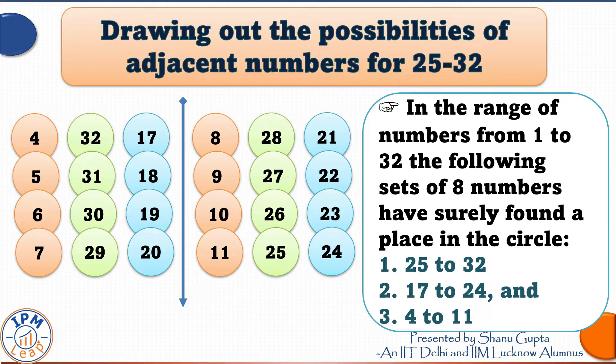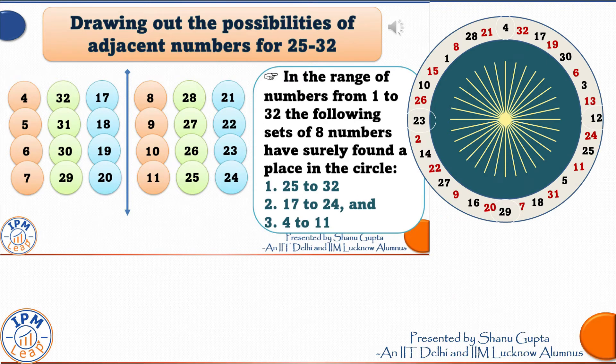But another interesting thing to note is that the numbers 25 to 32 green circles, the numbers 17 to 24 blue circles and the numbers 4 to 11 orange circles. These 24 numbers have already reserved a position on our circle of 32. Do you want to confirm what I just said? Okay, let us highlight each triplet on this original circle of 32 numbers. 4, 32, 17.